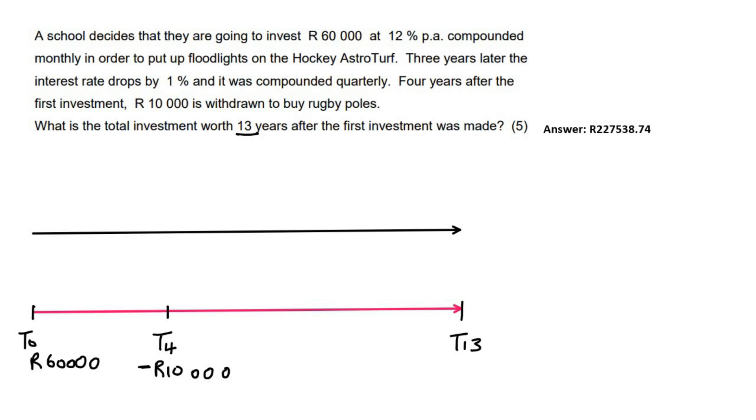Now we need to look at the interests. So they tell us that it's going to be 12% compounded monthly. Then it changes three years later. Okay, so for the first three years, so that's up to there, the interest rate is 12% compounded monthly. So I'll just say 12% monthly.